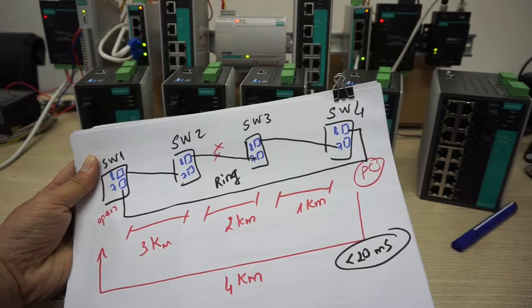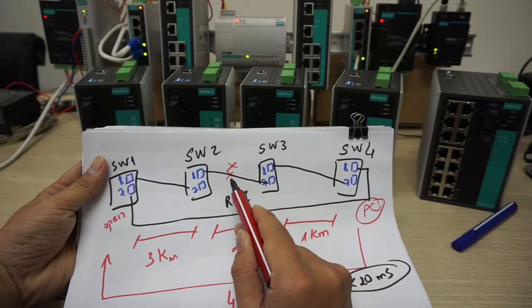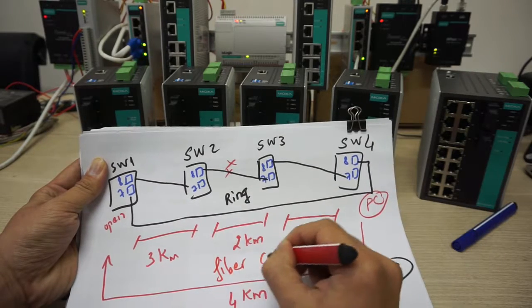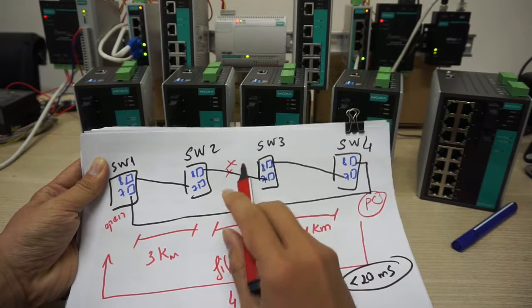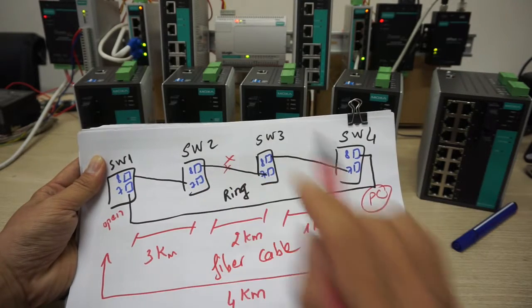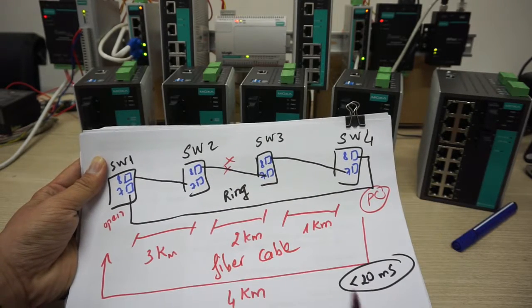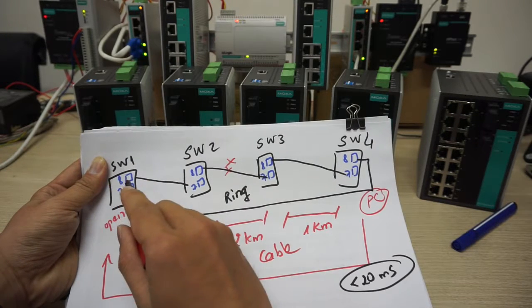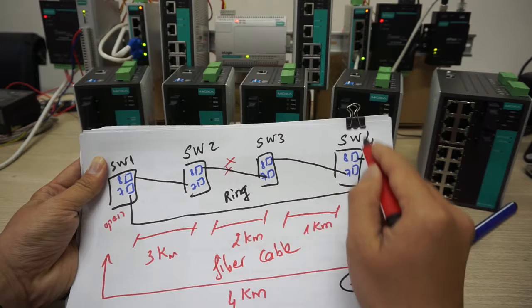So right now, what happens if the wiring right here, the fiber cable I mean, what happens if the wiring right here is broken? As usual, the diagram like this: switch 1 will connect to switch 2, 3, and 4 and get the data.